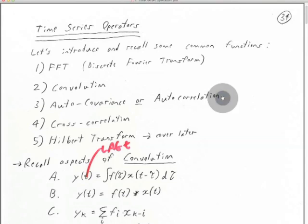There is also the auto covariance — or as I more often call it, the autocorrelation — and that is an extremely useful technique. It's the operator behind the whole vibrosize technique.